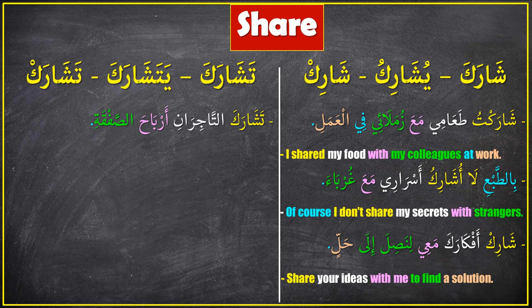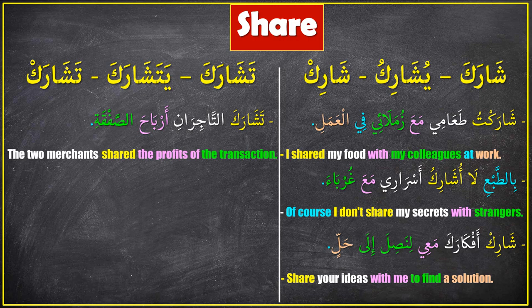First sentence: تشارك التاجران أرباح الصفقة — it means 'The two merchants shared the profits of the transaction.' تشارك التاجران — the subject here is dual, not singular — أرباح — the profits — الصفقة — the transaction. So the subject must be dual or plural.